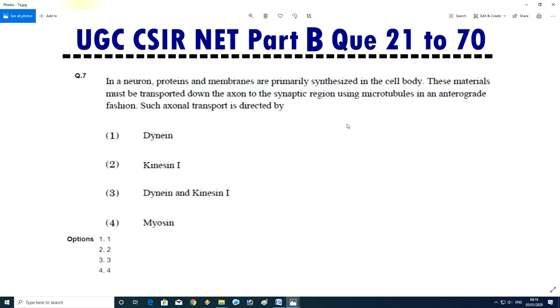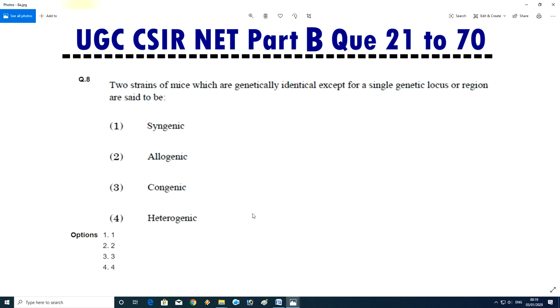Question No.7 - In a neuron, protein and membrane are primarily synthesized in cell body. These materials must be transported down to axon to synaptic region using microtubule in an anterograde fashion. Such axonal transport is directed by dynein, kinesin, or dynein and kinesin and myosin. Answer is B, kinesin.